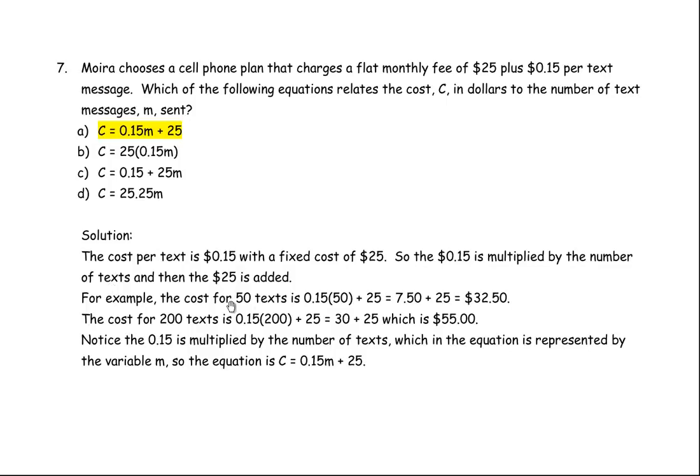For example, if Moira sends 50 text messages in a month, we take 0.15 times 50 and add 25. 0.15 times 50 is $7.50, plus 25 equals $32.50.